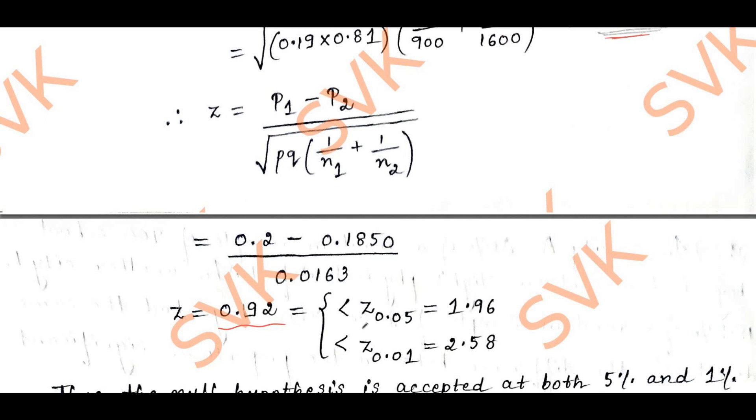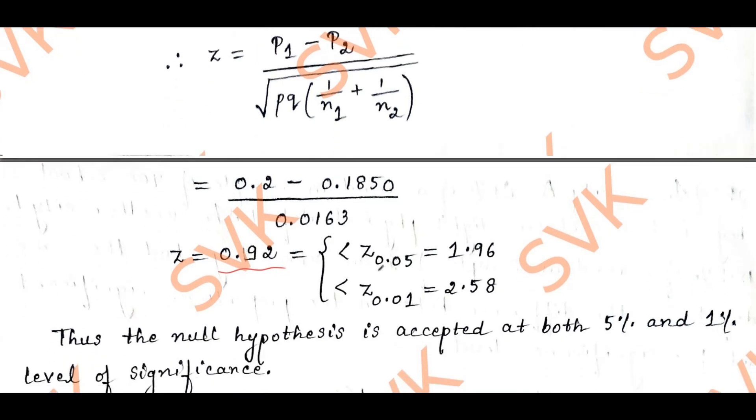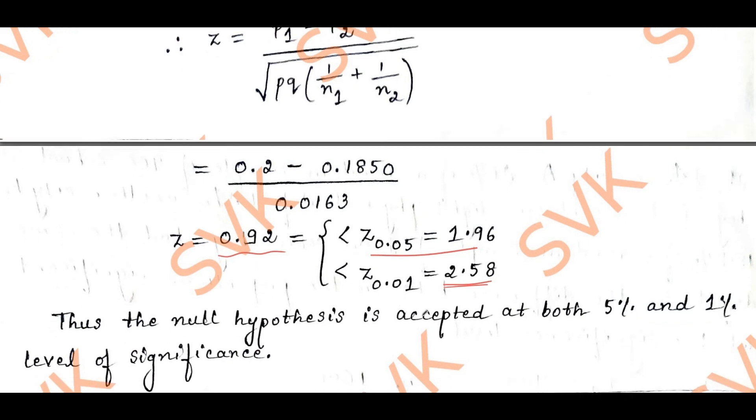I am checking for a two-tailed test. For 5% level of significance, the value is 1.96, which is greater than 0.92. For 1% level, it is less than 2.58. Thus, the null hypothesis is accepted at both 5% and 1% level of significance. As the given question is only 5%, you can define for 5% alone. This is how we solve this problem.